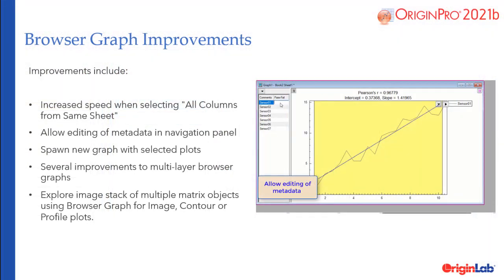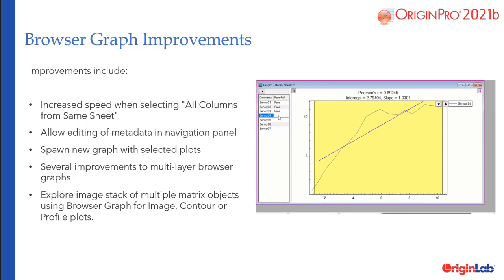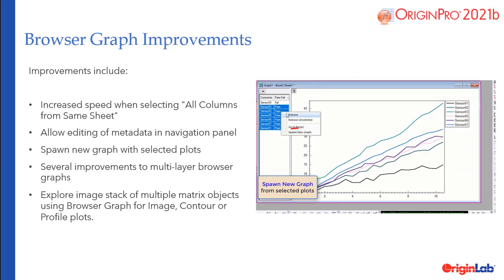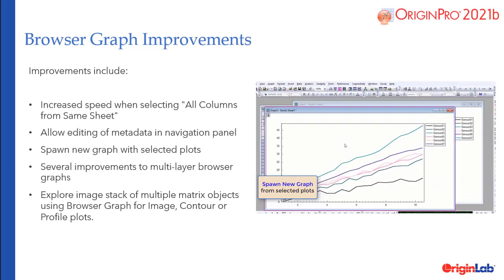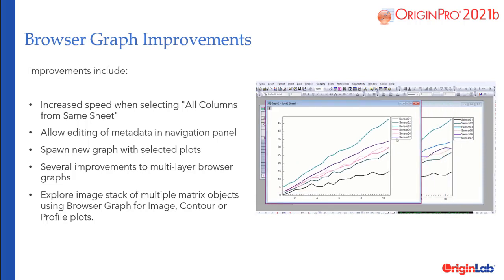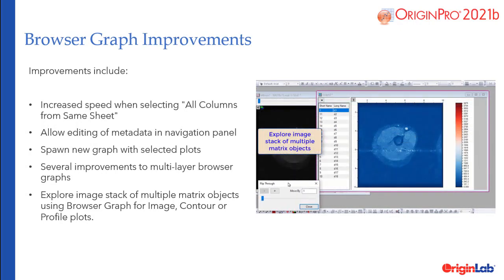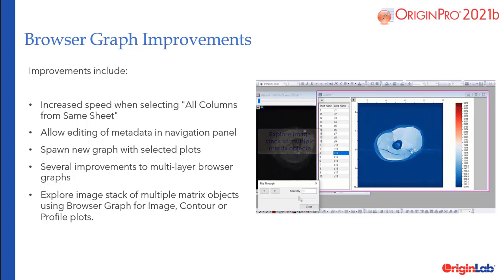Browser graph improvements include increased speed when selecting all columns from the same sheet, spawn a new graph with selected plots, several improvements to multilayer browser graphs, and the ability to explore an image stack of multiple matrix objects using the browser graph for image, contour, or profile plots.